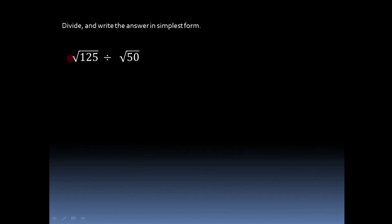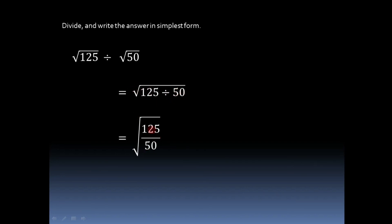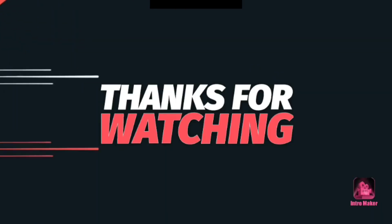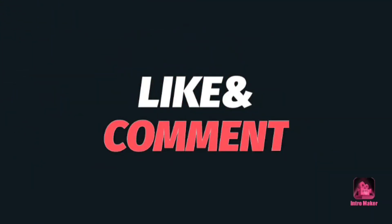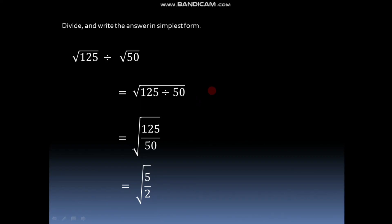Another problem: root 125 divided by root 50. Again the orders of these two surds are equal, so we only divide the radicands: 125 divided by 50. We write root 125 divided by 50. Dividing by 25, we get 25 fives in 125 and 25 twos in 50, so the answer is root 5 over 2. This is the simplest form of the division of these two given surds. This is how we can multiply and divide two surds.